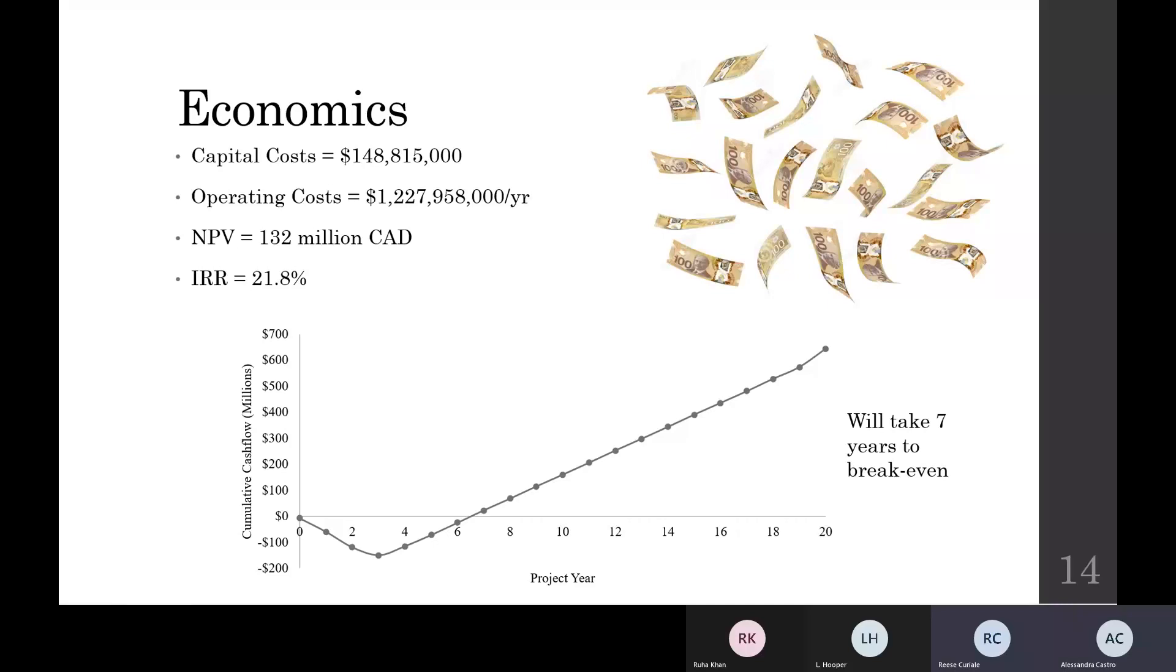The total capital cost to build our plant is $149 million. The total operating cost is $1.2 billion per year.